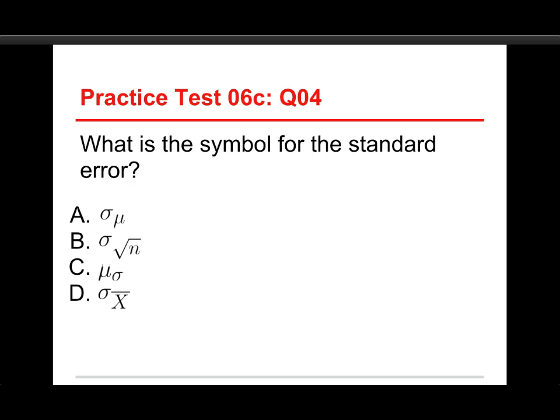What is the symbol for the standard error? And you have the choice of sigma sub mu, or sigma sub square root of n, or mu sub sigma, or sigma sub x bar. The answer to this one is D. It's sigma, which means standard deviation, but the sub x bar means that it's the standard deviation of the distribution that's based on sample means.